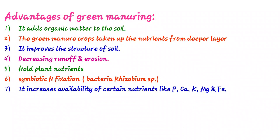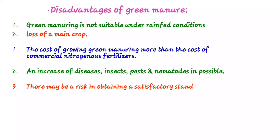Now, the disadvantages. Green manures are not suitable under rainfed conditions because legumes are not well decomposed due to lack of moisture. Under rainfed conditions the moisture content is less, so the material does not properly decompose. Green manure crops are not suitable in areas with below 550 mm of rainfall.